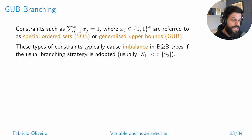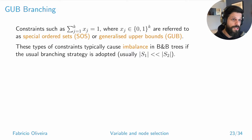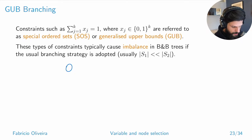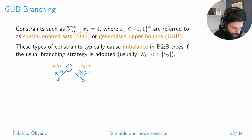GUB branching is specifically related to binary variables with constraints like sum of x equals one — called Special Ordered Sets or Generalized Upper Bounds. The problem is that with traditional branching, if you say x1 equals zero or x1 equals one, setting x1 to one forces all other x's to zero.